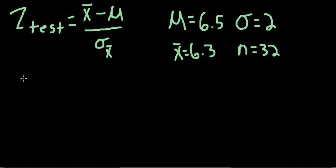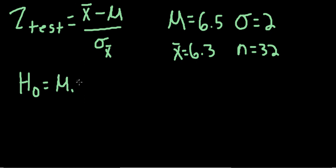So first, we can state the null hypothesis, which would be that the population in general would not be different from or would be equal to the population under the new method.